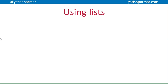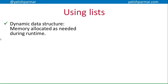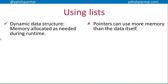A linked list is a dynamic data structure — it can grow while we're using it. Memory is allocated as needed during runtime, so you don't over-allocate or run out of space. However, the pointers can use more memory than the data itself. For example, if you're storing a single byte (0–255) but using 64-bit addressing, your pointers are larger than the data — which wastes resources.